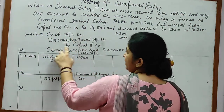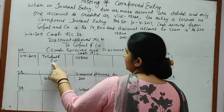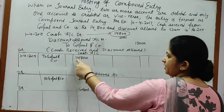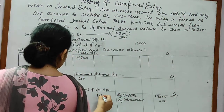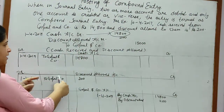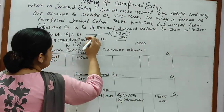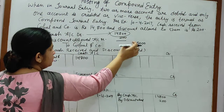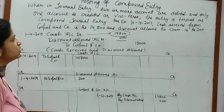Cash account debit: on the debit side of cash account, date 1st April 2019, name in particulars column is 'To Gopal and Company', amount 14,800. Discount allowed account debit: date 1st April 2019, on the debit side name is 'To Gopal and Company', amount 200. Gopal and Company is credited: on the credit side of Gopal and Company the names are 'By Cash Account' and 'By Discount Allowed Account', amounts 14,800 and 200, total 15,000. This is the posting of the compound entry.